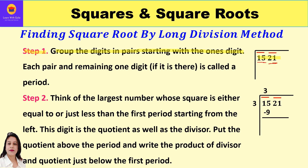Each pair and any remaining single digit is called a period. So the pairs 15 and 21 are both called periods — there are two periods here. For example, if the number were 71521, we would get three periods: 7, 15, and 21. That is how we form periods.